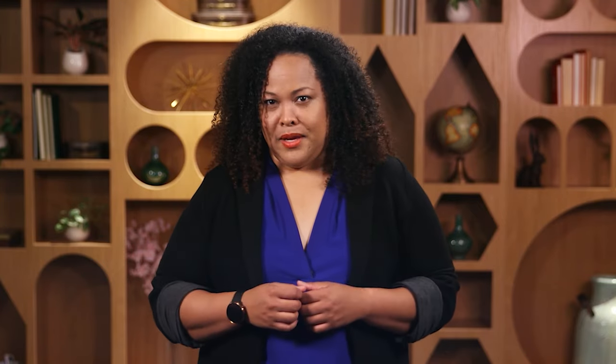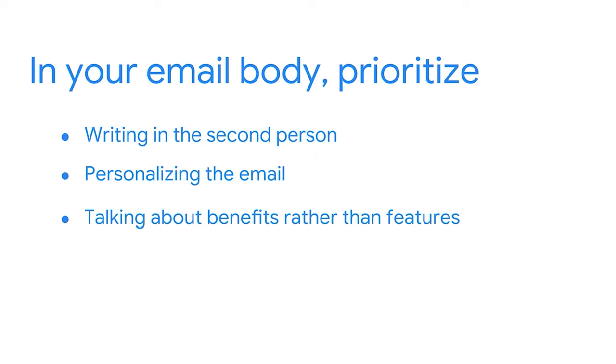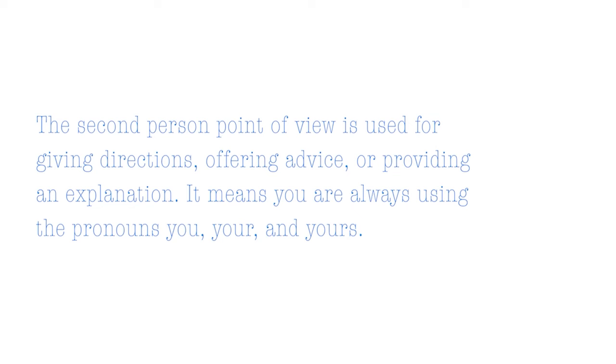Now let's move on to the body of the email. The body is the text in the main content of your email. When you're writing it, consider: how can this content help your reader, and what stories can you tell them? After you've answered those questions, prioritize writing in the second person, personalizing the email, telling about the benefits rather than the features, and being brief. Ensure you are always speaking directly to your readers by using second-person language — always using the pronouns you, your, and yours.